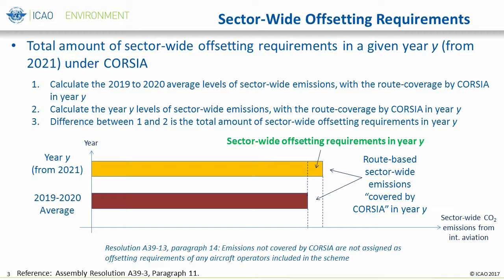There are a couple of points to remember to help understand this concept. First, although all international CO2 emissions are to be reported, not all CO2 emissions count toward the offsetting requirements, which are based on the participation of states in the phased implementation and route-based approach, in addition to other exemptions. Paragraph 14 of Resolution A39-3 states that emissions not covered by CORSIA, as the result of phase implementation and exemptions, are not required to be offset. Second, the bottom bar for the sector-wide baseline is not a fixed value for each year from 2021, because of the coverage of routes changing depending on the number of participating states in that year.